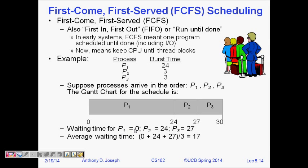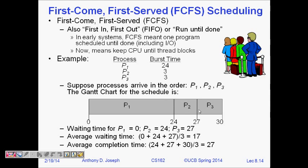Average completion time is the average time at which jobs finish. P1 completes at 24 seconds, P2 at 27 seconds, and P3 at 30 seconds. So average completion time is (24 + 27 + 30) / 3 = 27 seconds. These parameters tell us how well the scheduling algorithm is performing.